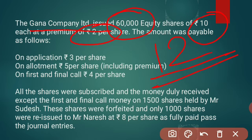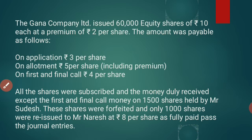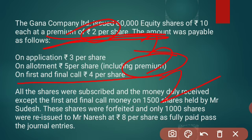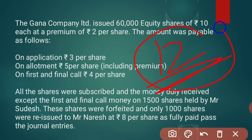The company collected this 12 rupees in three different installments. On application they received 3 rupees, on allotment they received 5 rupees which includes the premium — 3 rupees for share capital and 2 rupees for securities premium. The next stage is the first and final call of 4 rupees. In total, 3 plus 5 plus 4 equals 12 rupees received.